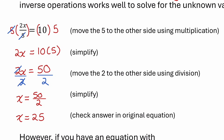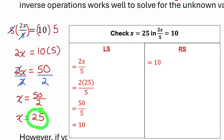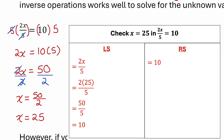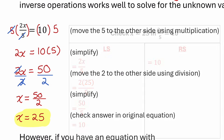We could check that value of 25 in the original equation to make sure that it makes the left side equal to the right side. 2 times 25 is 50, divided by 5 is 10. So 25 is the correct answer.